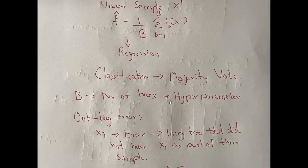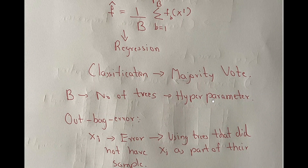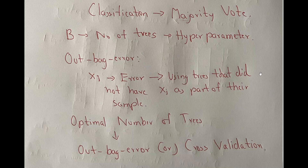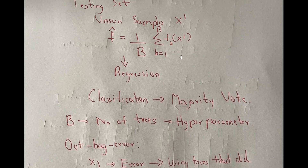B, the number of trees, is a hyperparameter. How can you estimate the optimal number of trees? You can either do cross-validation, or there is a concept called out-of-bag error. When each bagged dataset is created, some samples are left out. The decision tree created for that bagged dataset can be evaluated on those left-out samples, for which you have the ground truth. You average such errors across all B trees to get the out-of-bag error. Another way is cross-validation to find the optimal number of trees.